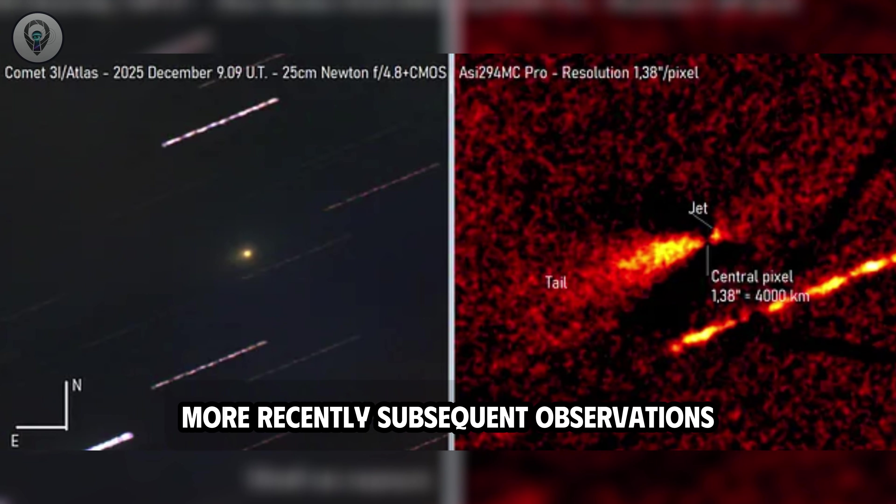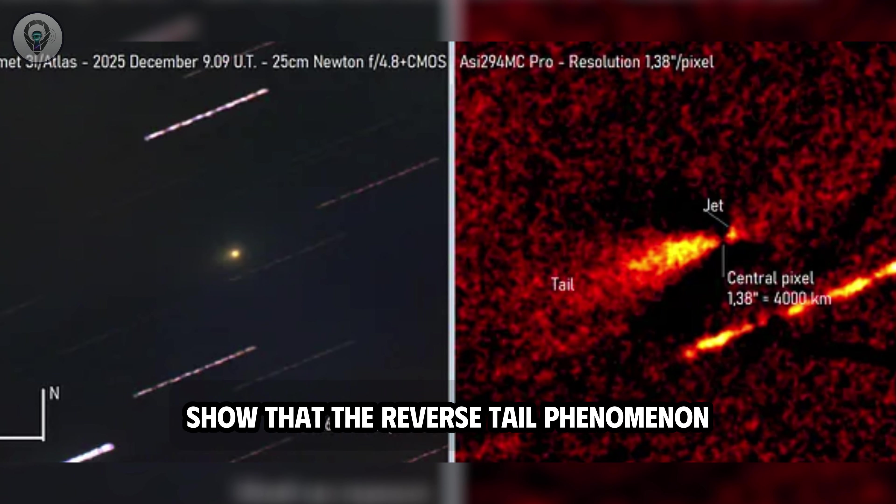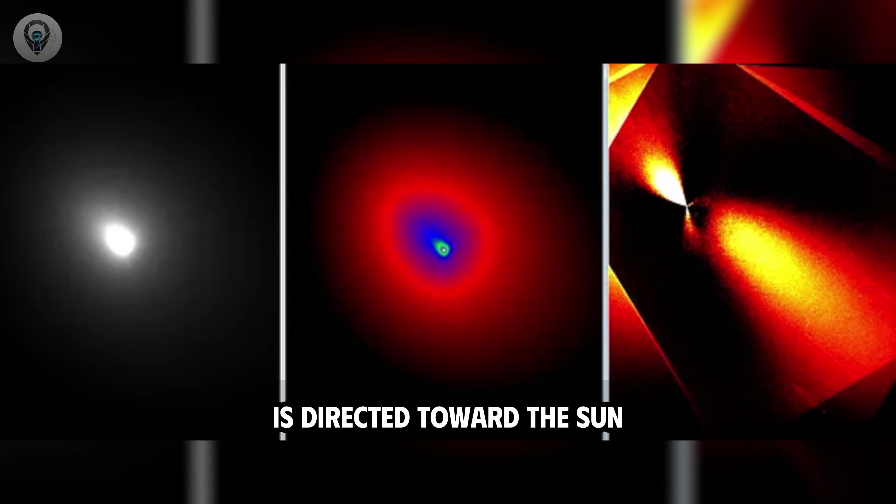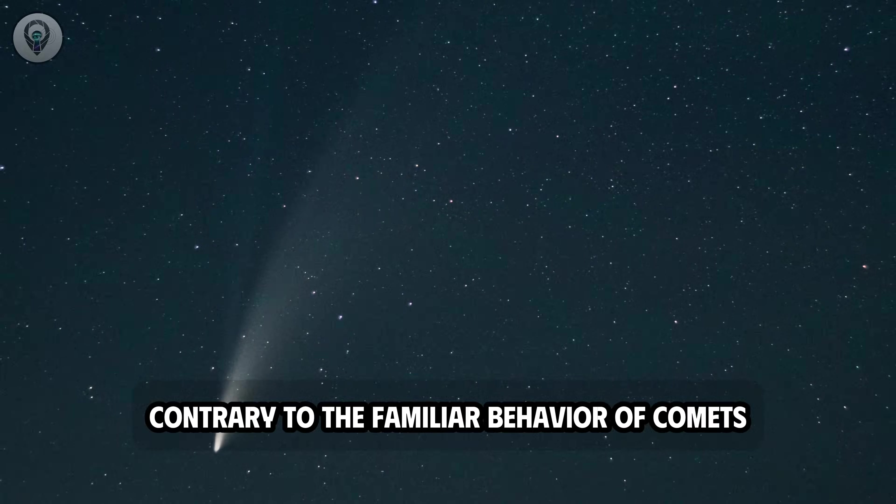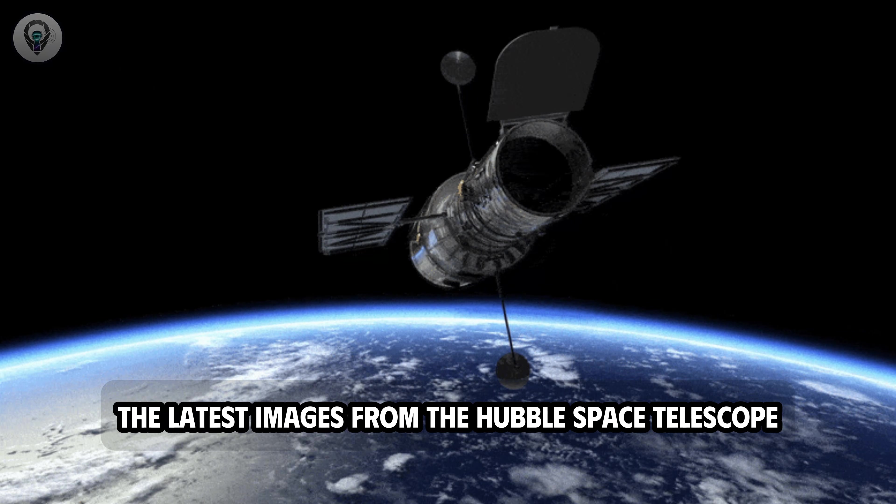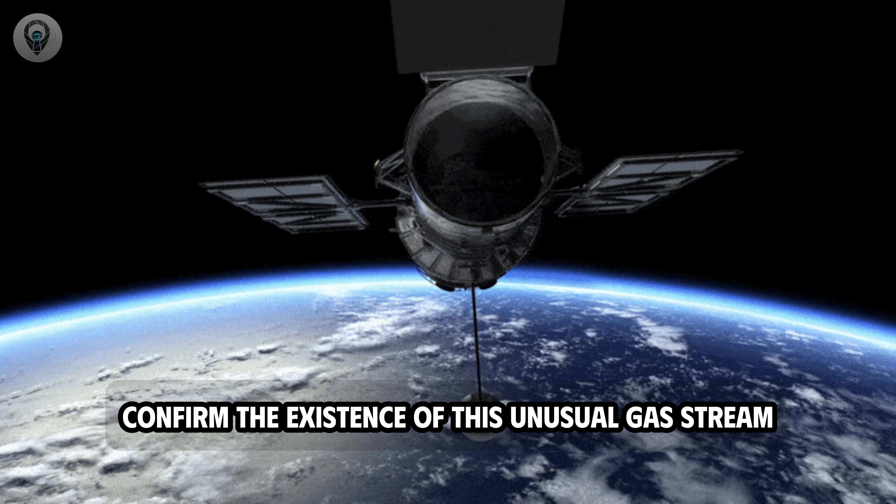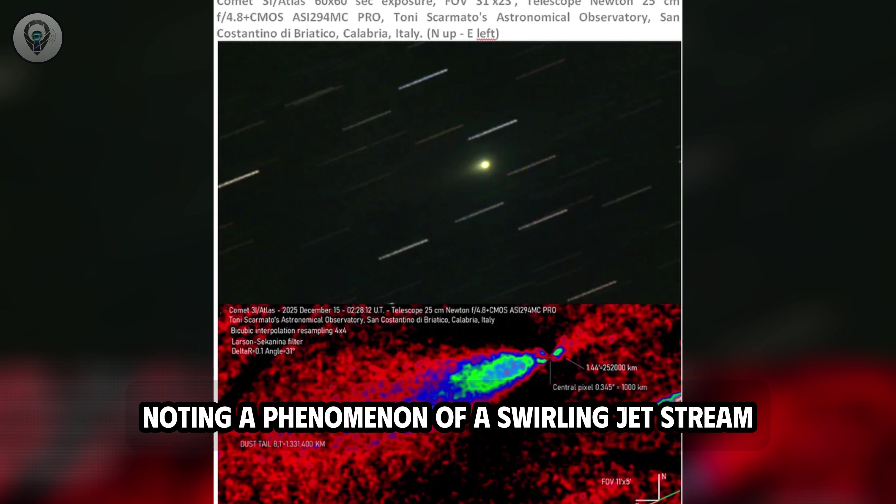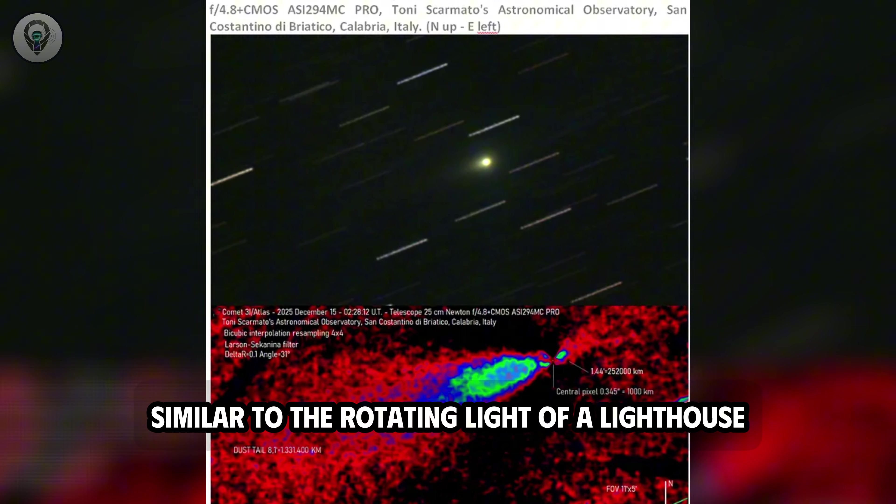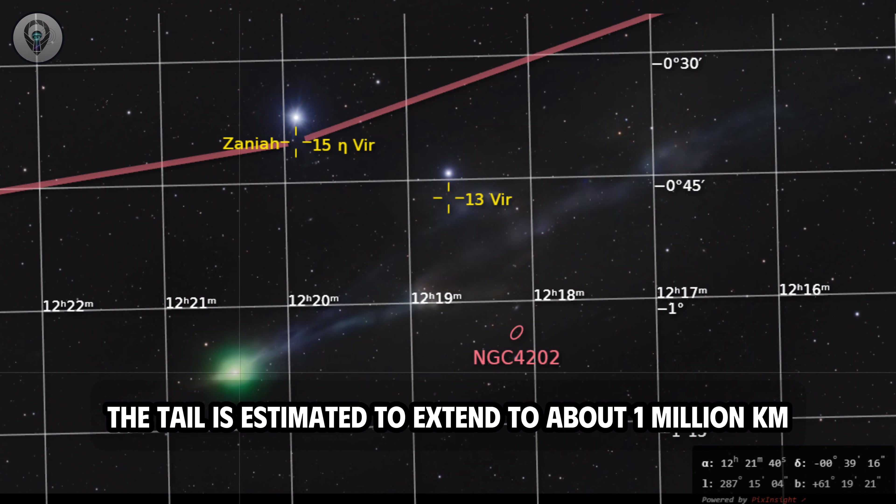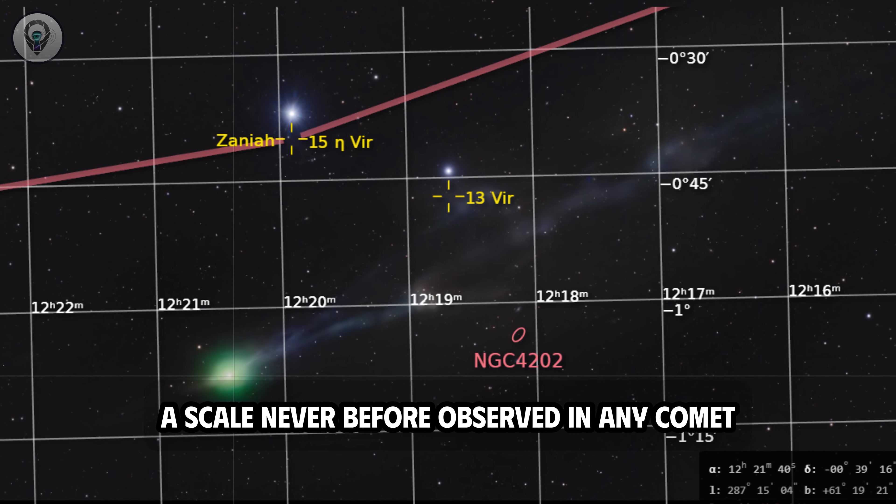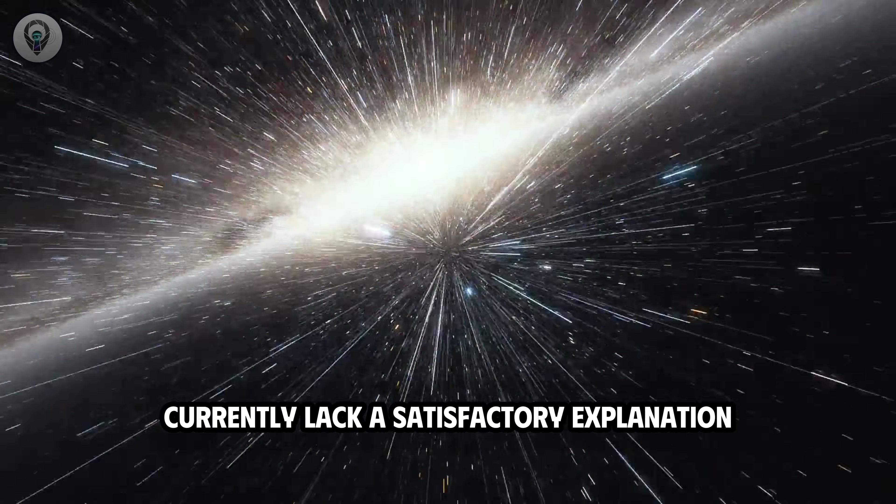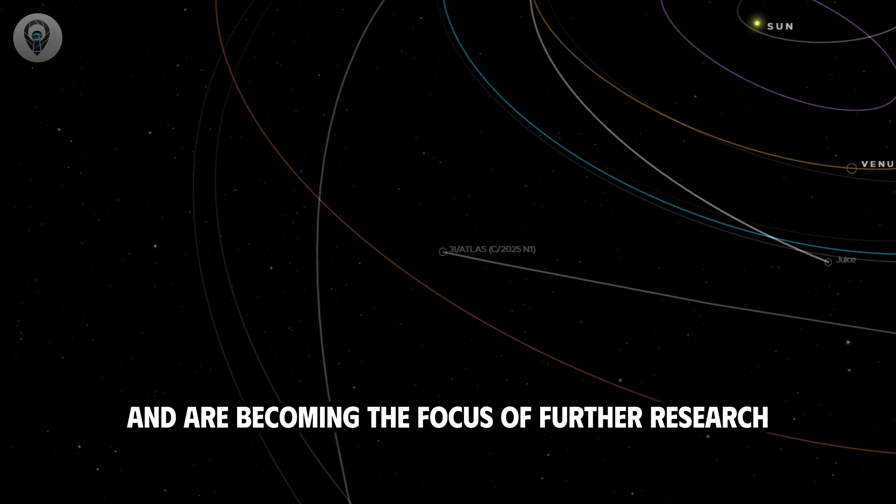More recently, subsequent observations show that the reverse tail phenomenon continues to exist, meaning the gas stream ejected from the object is directed toward the Sun, contrary to the familiar behavior of comets. The latest images from the Hubble Space Telescope confirm the existence of this unusual gas stream, noting a phenomenon of a swirling jet stream similar to the rotating light of a lighthouse. The tail is estimated to extend to about one million kilometers, a scale never before observed in any comet. These features currently lack a satisfactory explanation and are becoming the focus of further research on 3i Atlas.